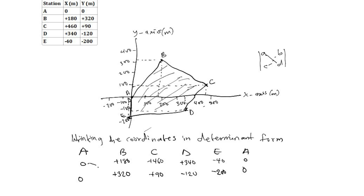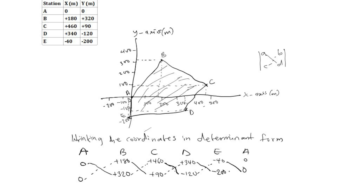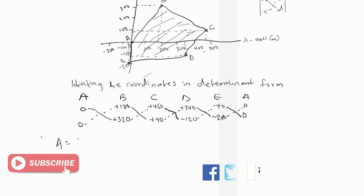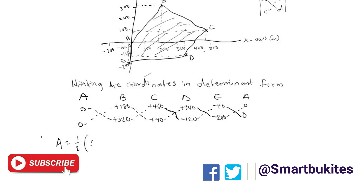Similarly here, we are going to compute: 0 times 320 minus 0 times 180, plus 180 times 90 minus 320 times 460, plus 460 times negative 120 minus 90 times 340, plus 340 times negative 200 minus negative 120 times negative 40, plus negative 40 times 0 minus negative 200 times 0. The total area will be one-half times the summation of these determinant terms.